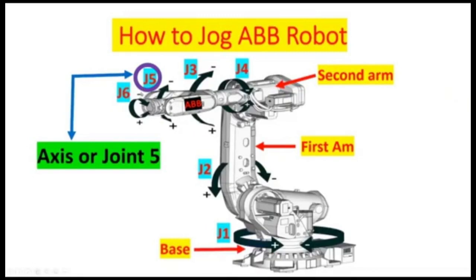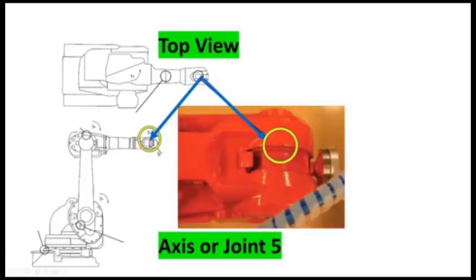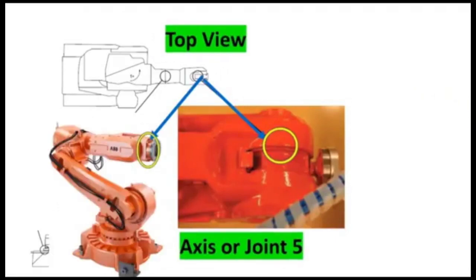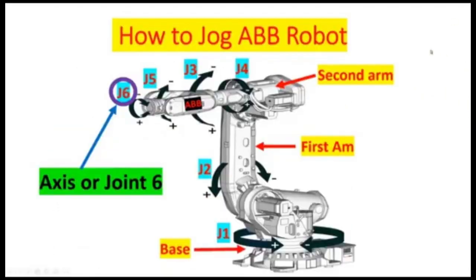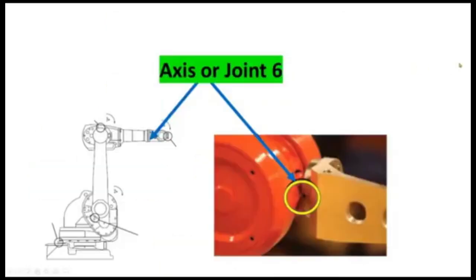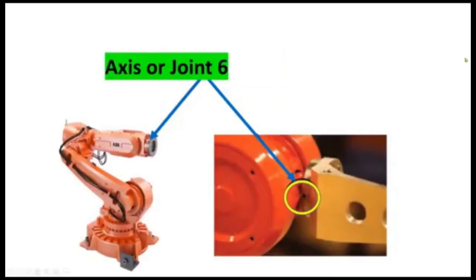Axis or joint five — this is the actual location on the drawing, and this is the actual location on the mechanical robot. And the last one is axis six — this is the actual location on the drawing, and the actual location on the robot.